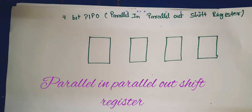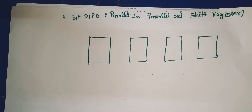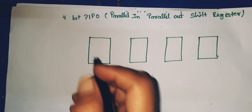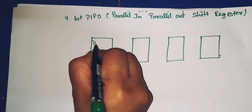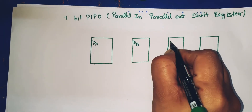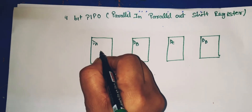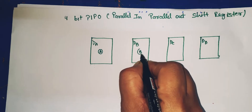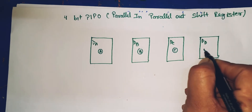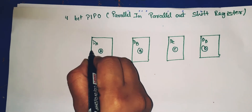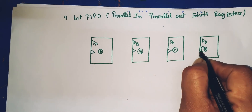In this lecture I will discuss parallel in parallel out shift register — a four-bit PIPO shift register. Four flip-flops are required, so I will draw four flip-flops here: DA, DB, DC, and DD are the inputs — flip-flop A, flip-flop B, flip-flop C, and flip-flop D.